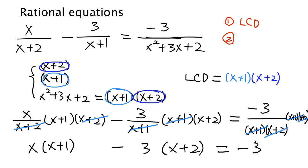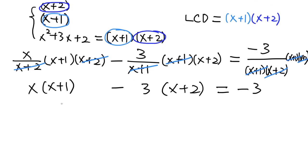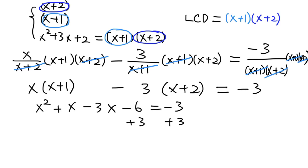The second step is to simplify and solve this equation. We expand everything out: x times x is x squared, x times 1 is x. Then negative 3 times x is negative 3x, and negative 3 times 2 is negative 6. That equals negative 3. Then we make the right-hand side 0 and combine like terms: x minus 3x is minus 2x, and minus 6 plus 3 is minus 3. This equals 0.